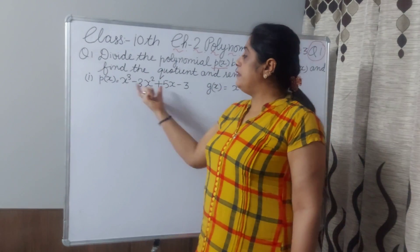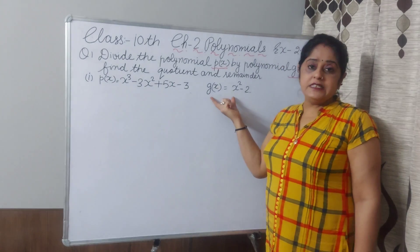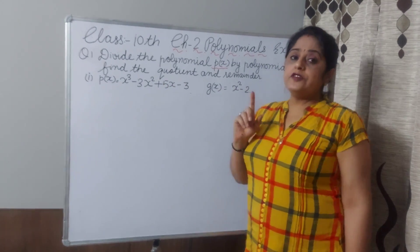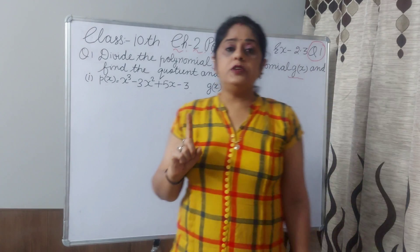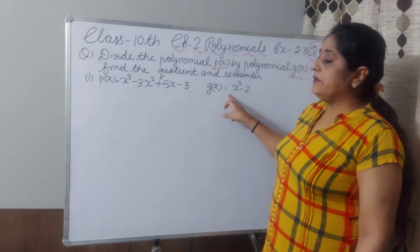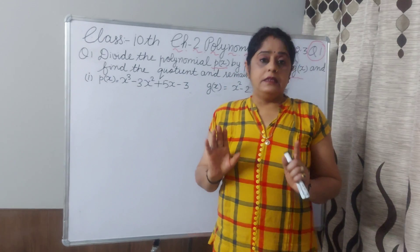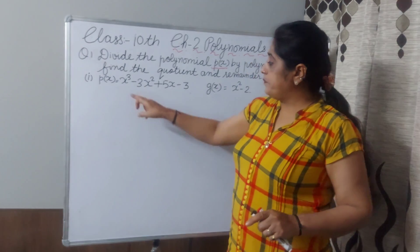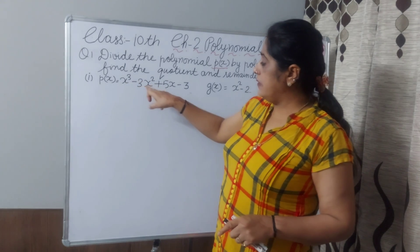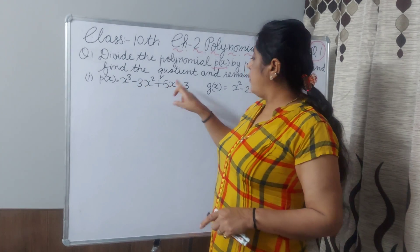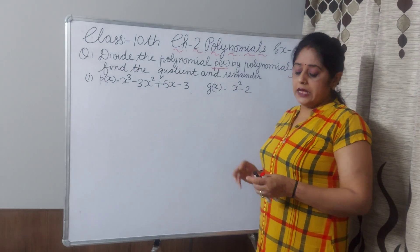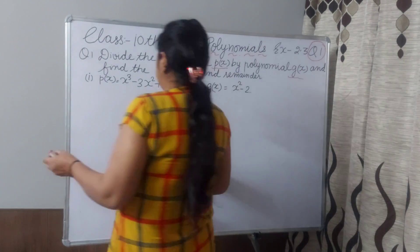This is polynomial P(x) and this is polynomial G(x). We have to divide this by G(x). First of all, one thing you have to consider: check both dividend and divisor — they should be in standard form. They are in standard form because maximum power then minimum then lowest, like that. Here x³ minus 2 is also in standard form. Now we will divide.